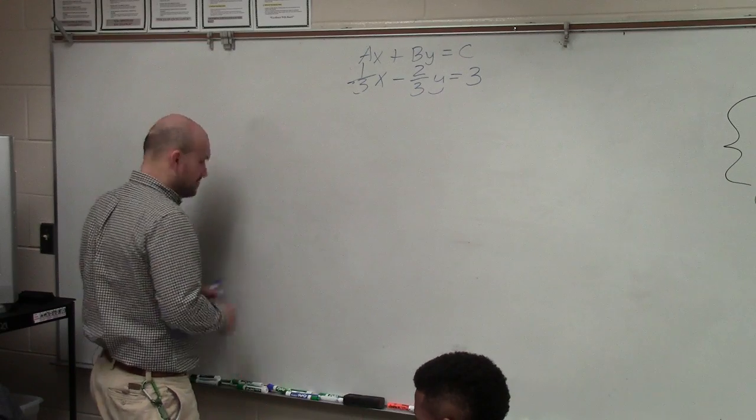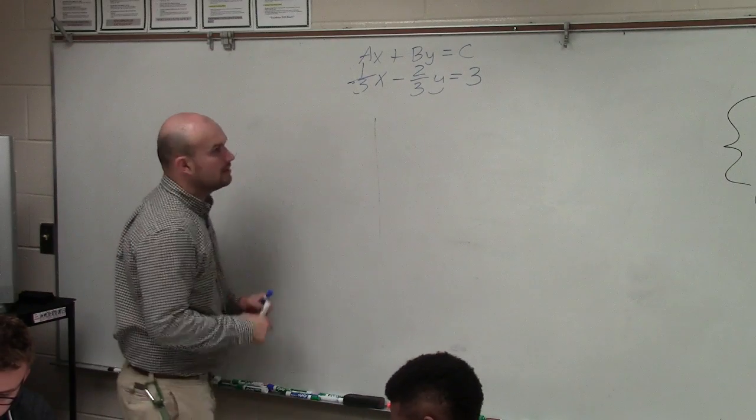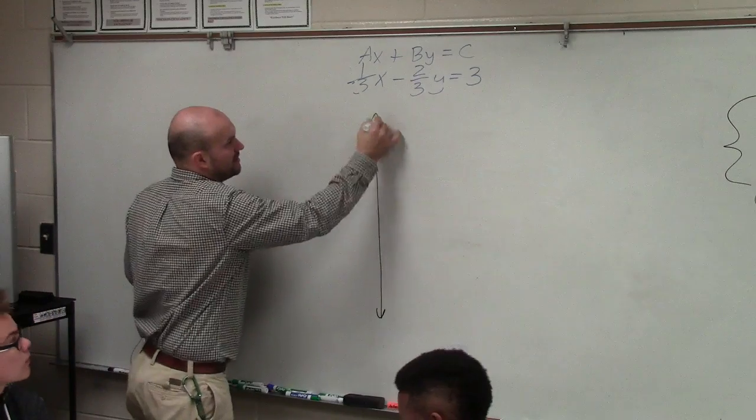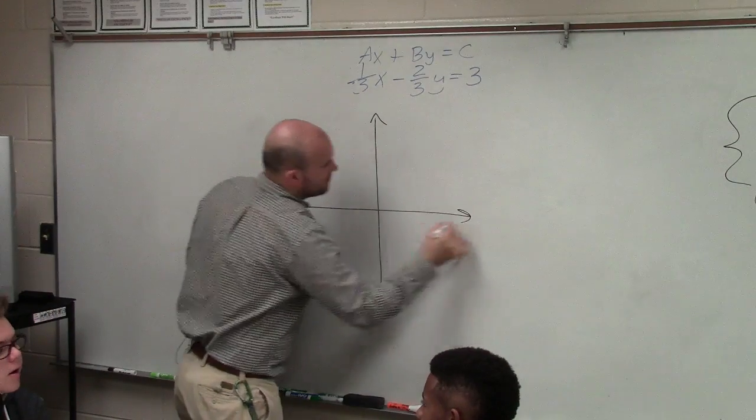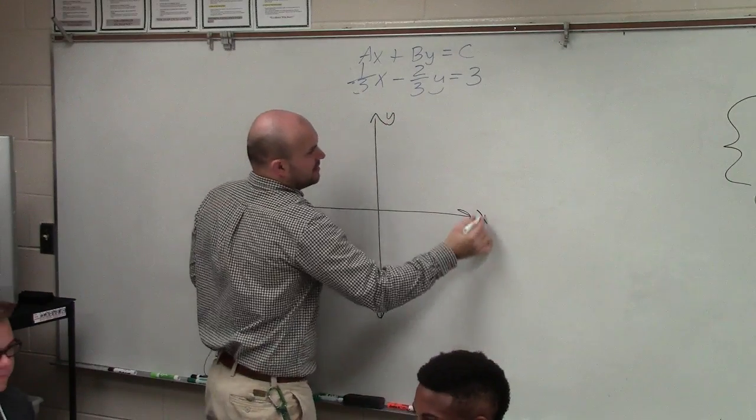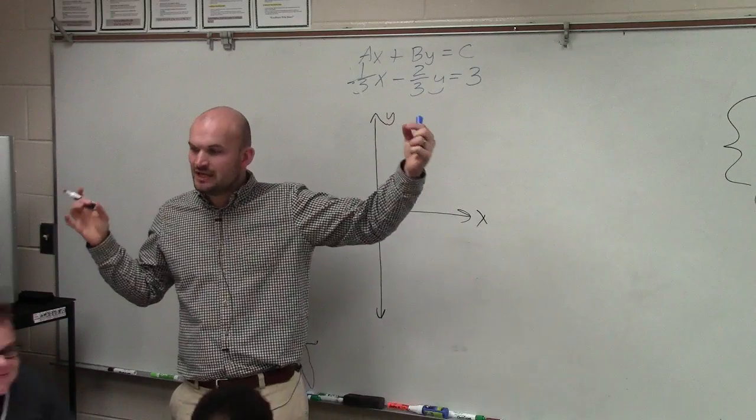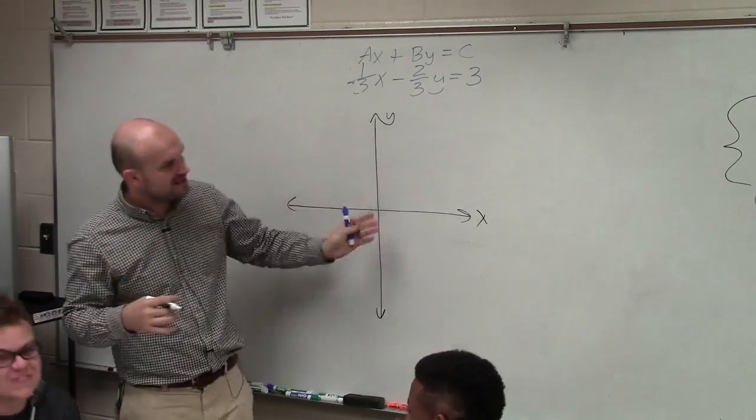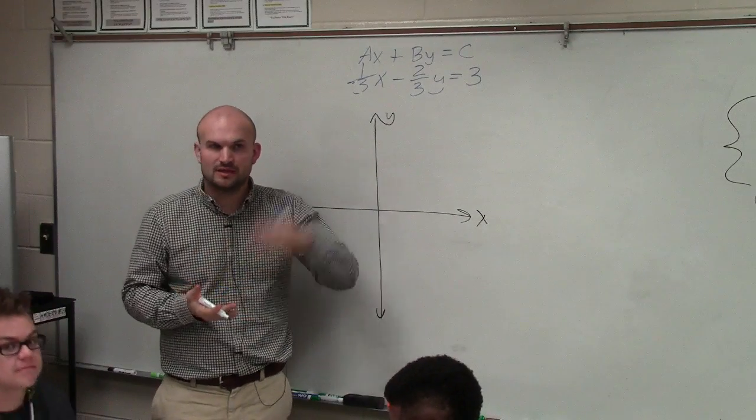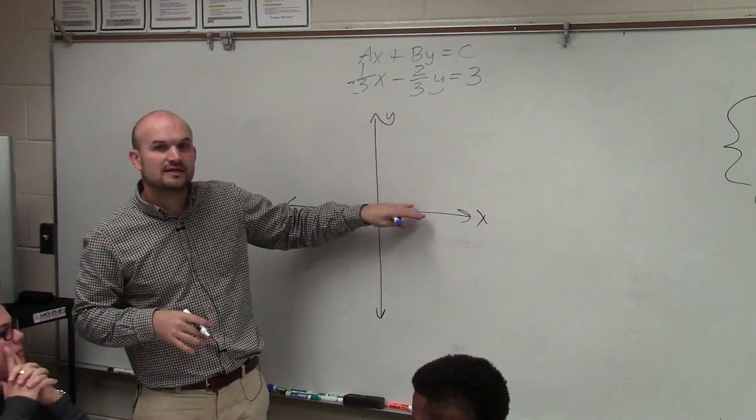So the other method goes into the understanding of a line. Now remember, ladies and gentlemen, a line is infinite, right? So when you're graphing your line, make sure you put arrows on this. Every single line, except for vertical and horizontal lines, is going to have an x and a y-intercept. Every other line is eventually going to cross the x and the y-axis.